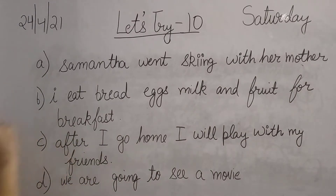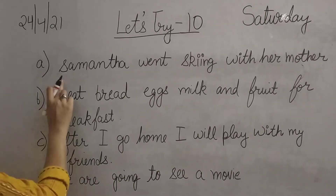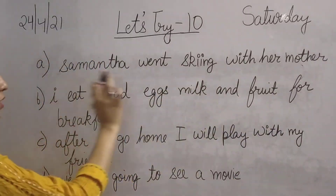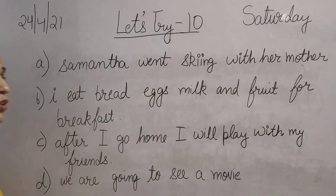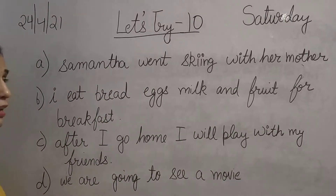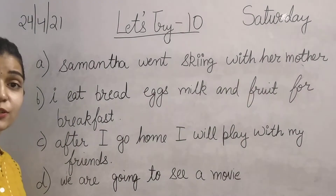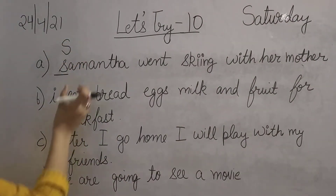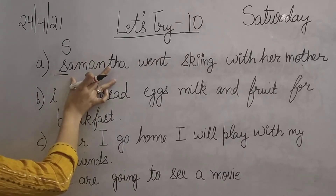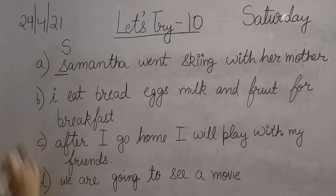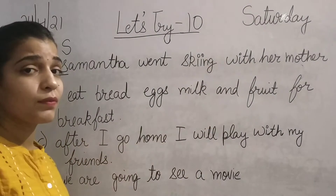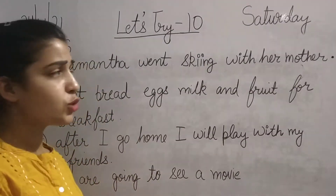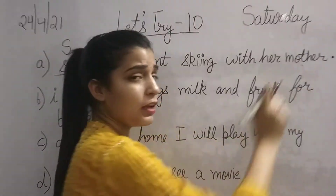The first sentence is: 'Samantha went skiing with her mother.' The first letter should be capital — Samantha ka S should be capital, because this is a name and the first letter of a name is capital. And at the end we will put a full stop, because no question is being asked.